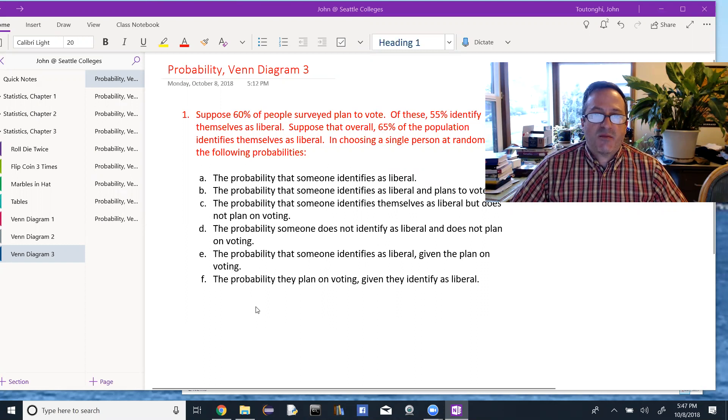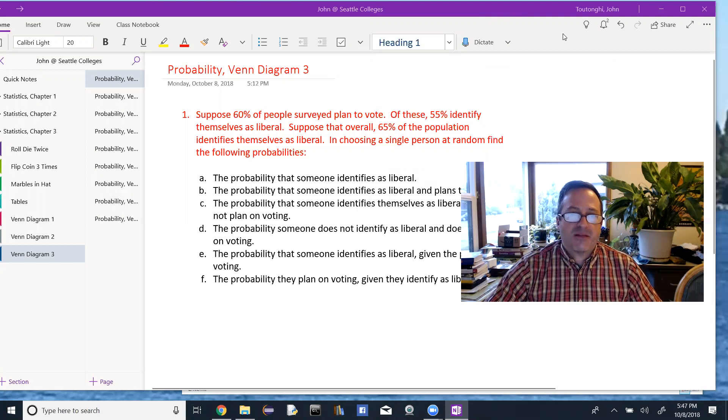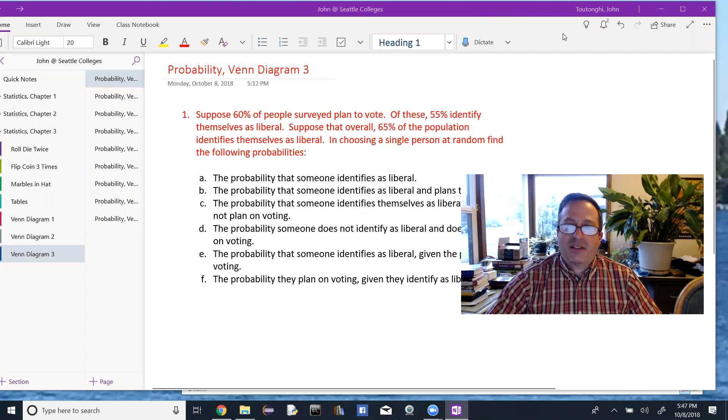Suppose 60% of people surveyed plan to vote. Of these, 55% identify themselves as liberal. Suppose that overall 65% of the population identifies themselves as liberal. In choosing a single person at random, find the following probabilities.